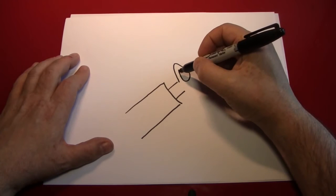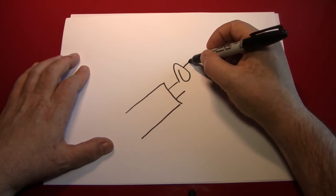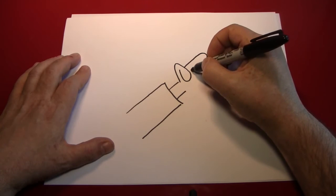Next you can line up the index finger with where the thumb folds. Make a line that comes out and then curve it back in.